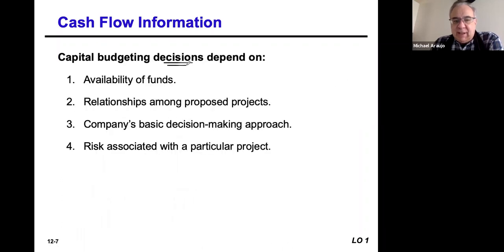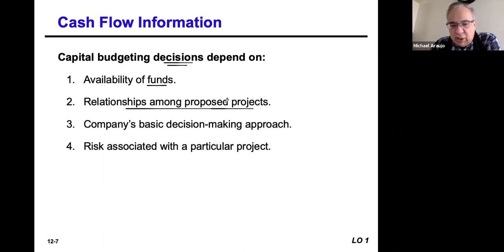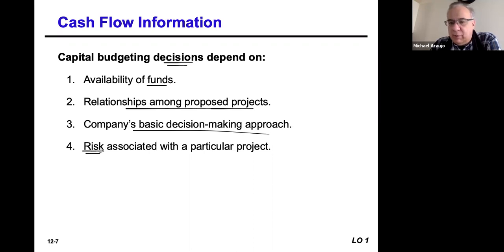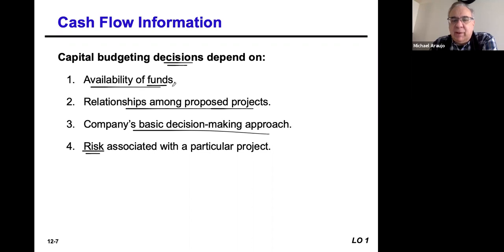The decisions are going to be based on a number of different things: Are there funds available in the corporation for this particular project? What's the relationship of the project to what the company is doing or where it wants to go? How does the company make decisions, and who do you have to get on board for the project to take off? All companies look at the risks they're taking with a particular project. They like investing in different ideas, but they want to make sure there's not excessive risk — because if the project is too risky, those funds can be used for better things.